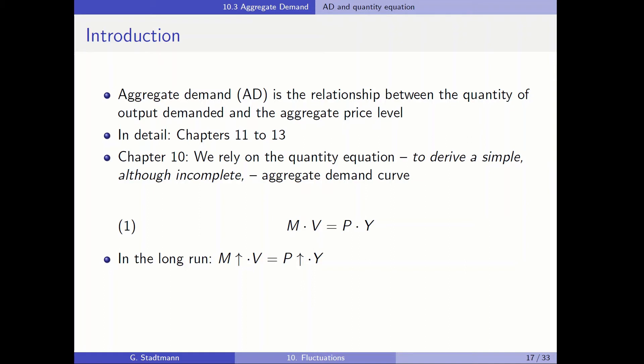In this part, like in section 10.3, we talk about the aggregate demand relationship. The aggregate demand relationship is the relationship between the quantity of output demanded and the aggregate price level. In detail, we'll discuss this phenomenon in chapters 11, 12, and 13. But here in chapter 10, we'll make a shortcut and rely on the quantity equation to derive a simple, although incomplete, aggregate demand curve.